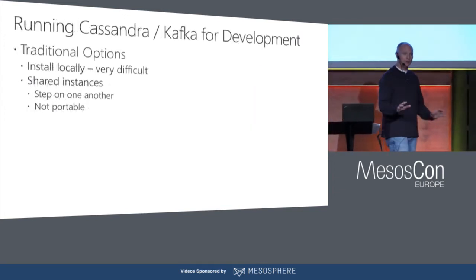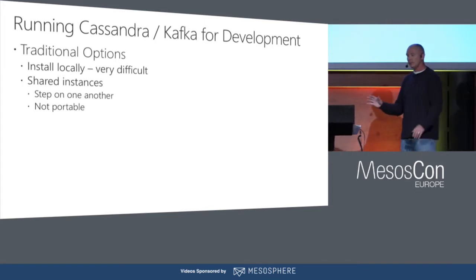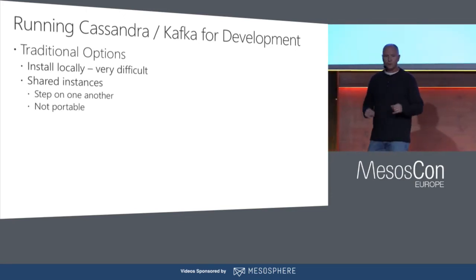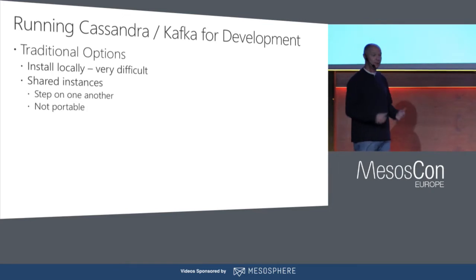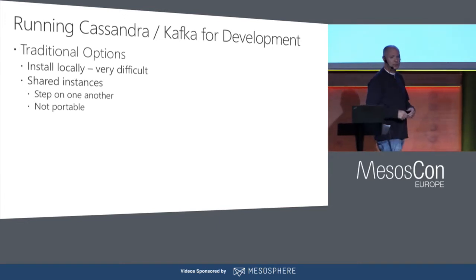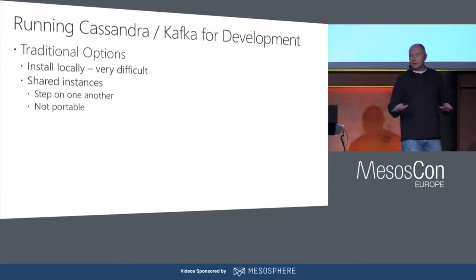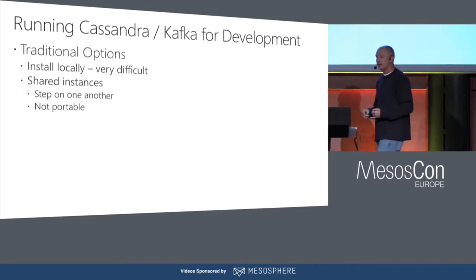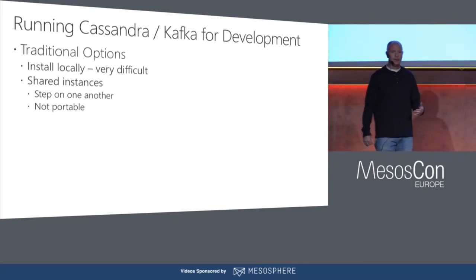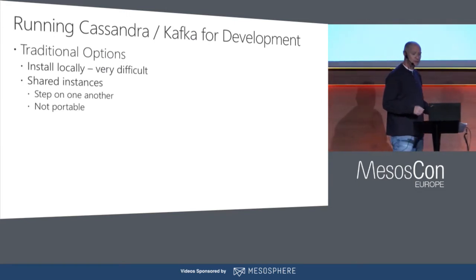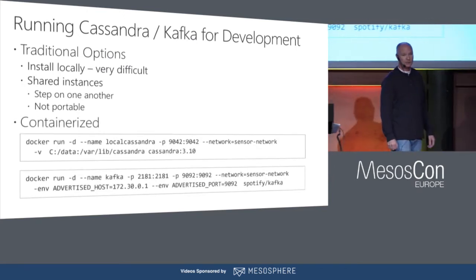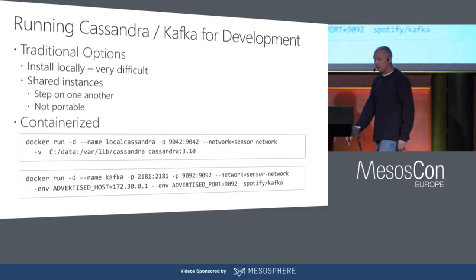Let's jump into the local development aspect — what containers do for fast data solutions. Prior to containers, how would you develop against Cassandra or Kafka? You'd have to either install it yourself or use a shared solution, neither of which is great. Installing it is difficult and wastes effort. Using a pooled solution means other people can step on your data, delete it, and it's not portable — you can't run on your laptop on a plane. Today, it's as easy as spinning up a container.